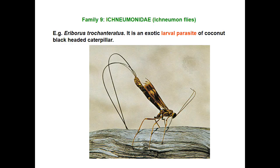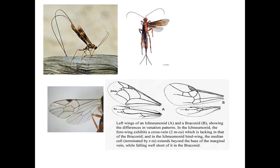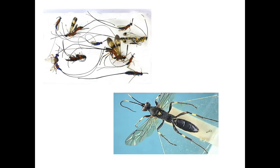Next family is Ichneumonidae, commonly called ichneumon flies. Adults are diurnal and visit flowers in daytime. The trochanter is two-segmented — a special character. The hind femur is with a trochanterus. The fore wings have two recurrent veins (median-cubital veins). The petiole is curved and expanded at the apex. The ovipositor arises anterior to the tip of the abdomen and is much longer than the body, extending out permanently. Example is Goryphus trochanterus, an exotic larval parasite of the coconut black-headed caterpillar.